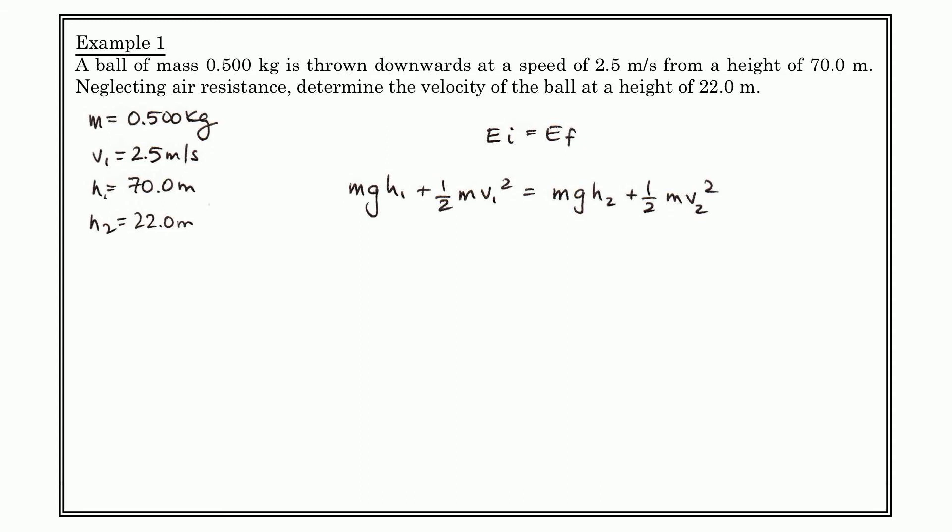And we can, of course, go through and say, well, what type of energy does this system have initially? Well, we know it's a ball, it has mass, and it's up at a height of 70 meters, so it's got some gravitational potential energy, but it's also thrown. And it's thrown with a speed of 2.5 meters per second, which means it has some kinetic energy to begin as well. The second half of the problem says, okay, what's the velocity of the ball? So we're looking for a kinetic energy component. What's the velocity of the ball at a height of 22 meters? So it's still got a height, so it's still got some gravitational potential energy with respect to the ground.